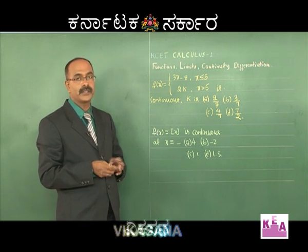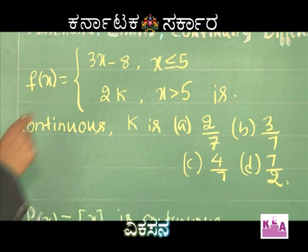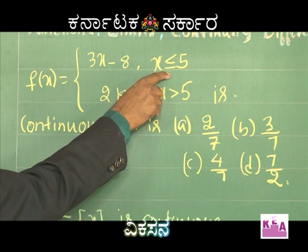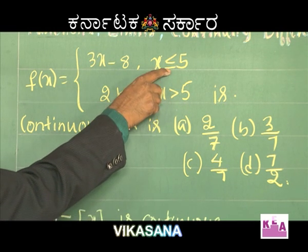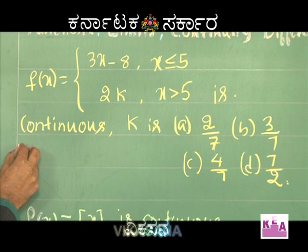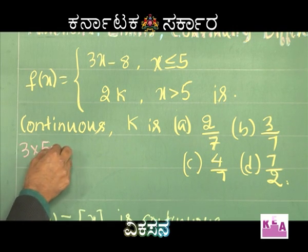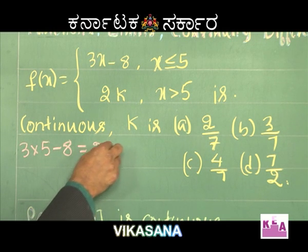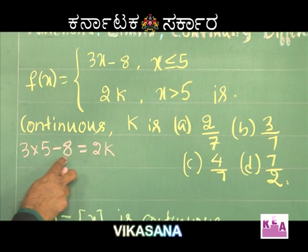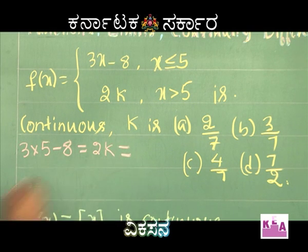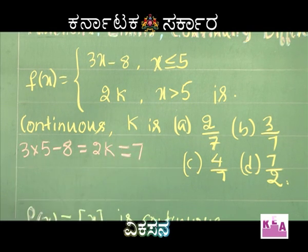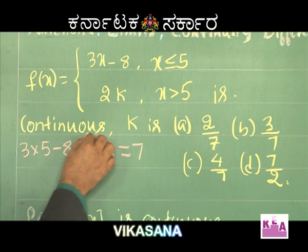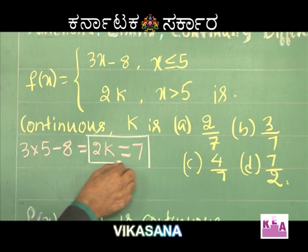For continuity, the limit as x tends to 5 from the left of f(x) must equal the limit as x tends to 5 from the right. The left-hand limit gives 3 times 5 minus 8, which must equal 2k. So 15 minus 8 equals 7, meaning 2k equals 7.